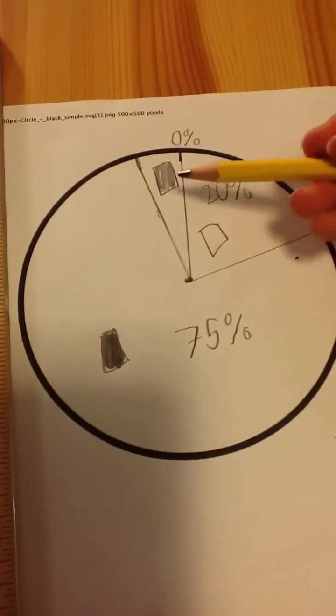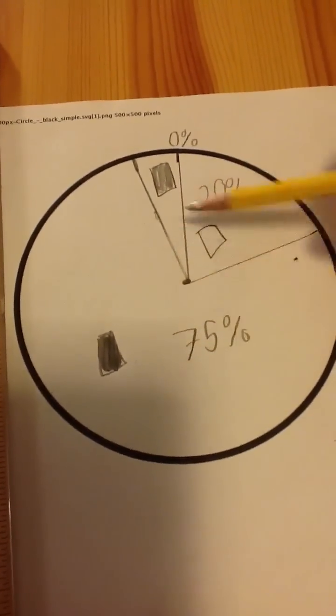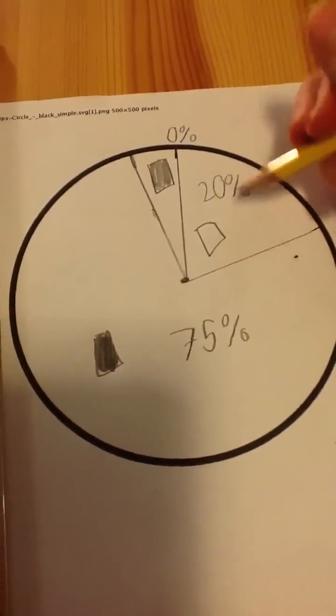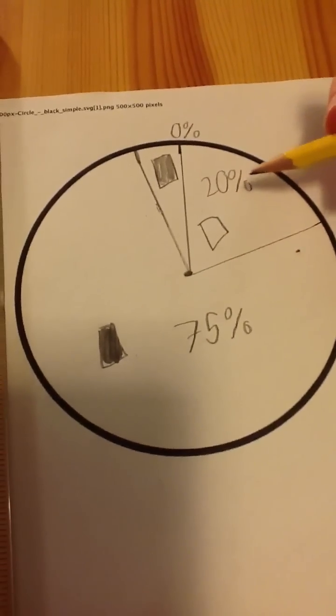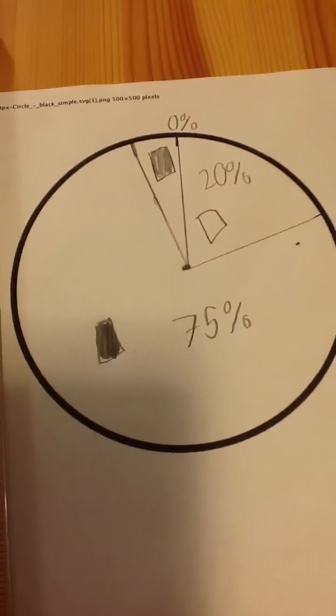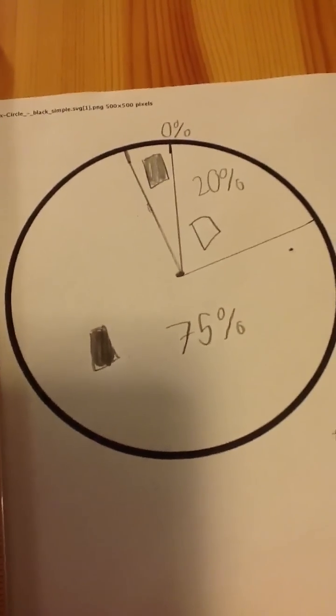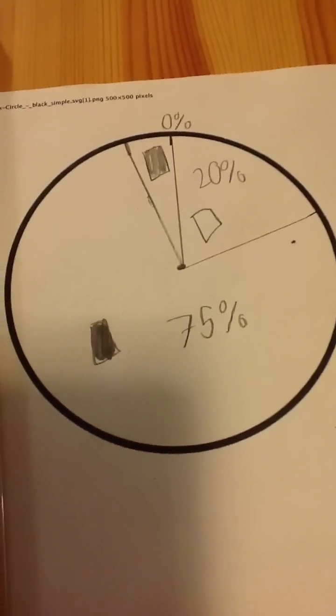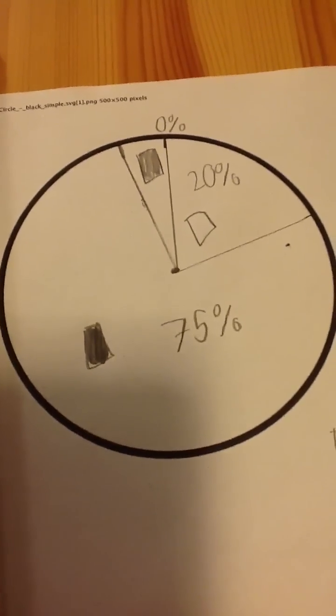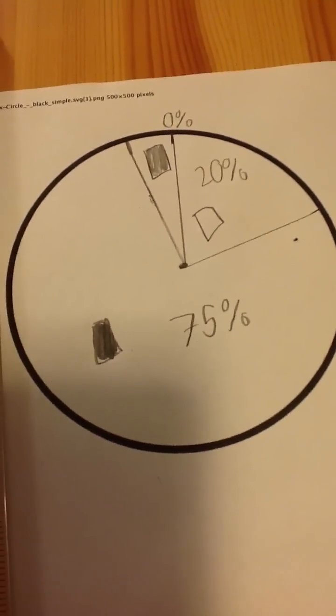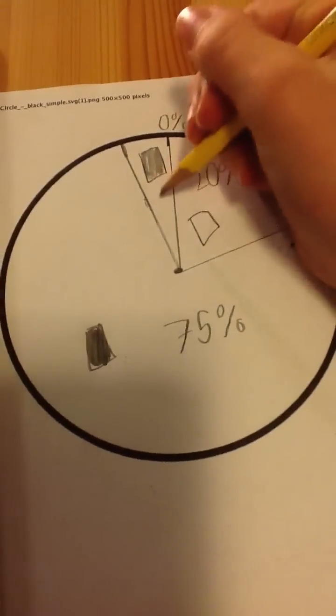So this is all equal to one hundred. Seventy-five plus twenty equals ninety-five. And then the leftover is five percent. So we want to add that. And there is our pie chart.